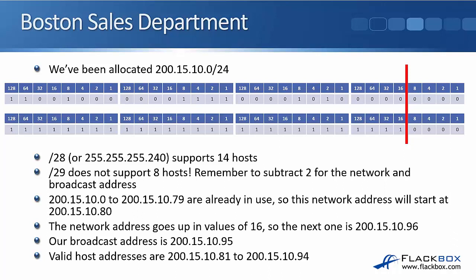They forgot to take away the two for the network address and the broadcast address. A slash 29 supports eight minus two = six hosts, and we require seven here, so that's not enough. So we're going to use a slash 28 again, which supports 14 hosts.